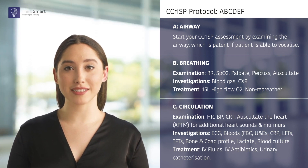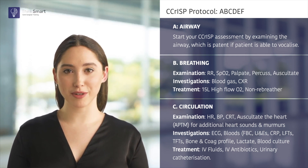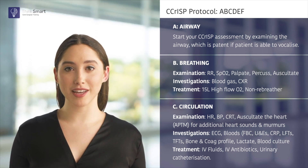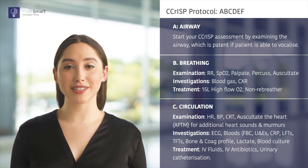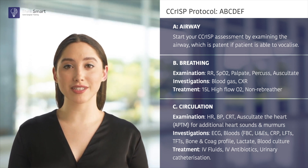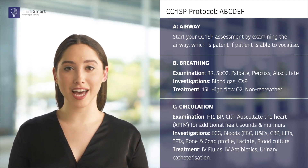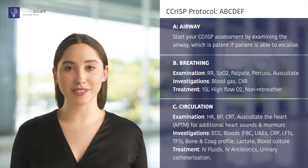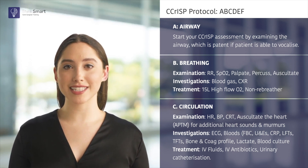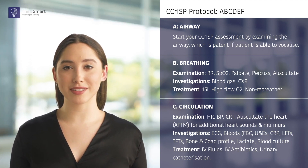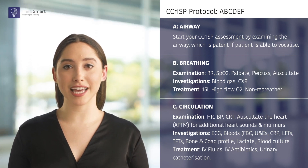I would obtain a confusion screen to include a full blood count, renal profile, CRP, LFTs, TFTs, bone and coagulation profile. To rule out infective causes of confusion I would also get a venous lactate with blood cultures and would start the patient on IV fluids and antibiotics as part of the sepsis 6. Finally I would insert a urinary catheter to closely monitor fluid balance.